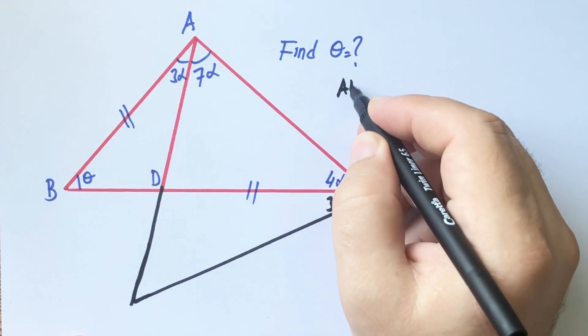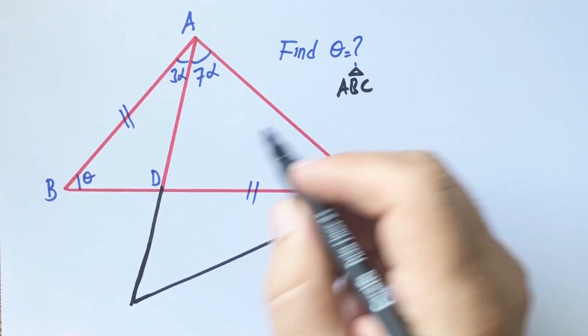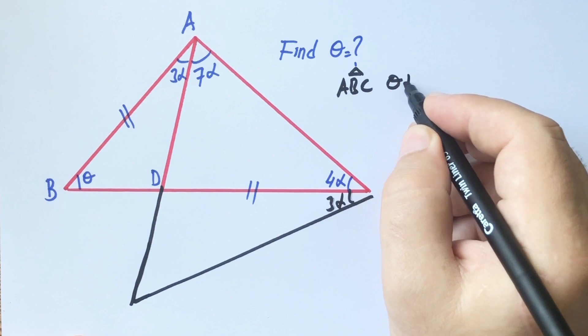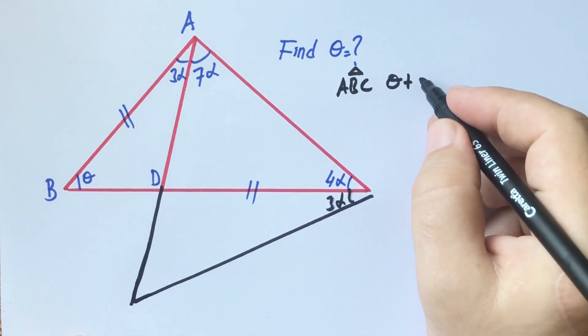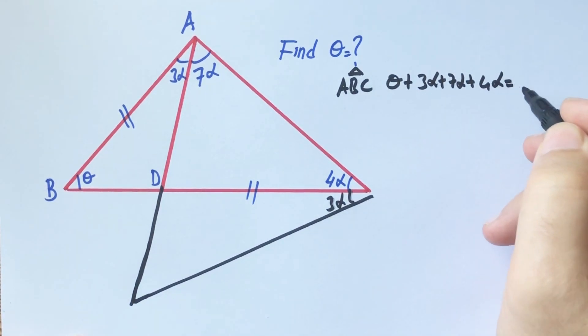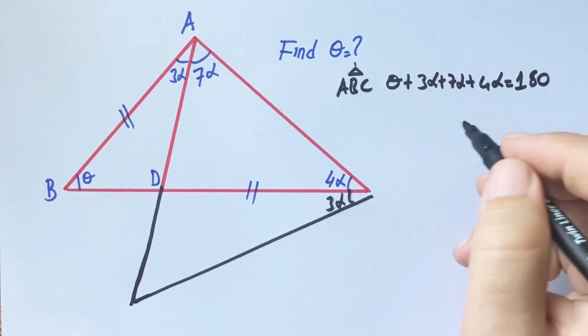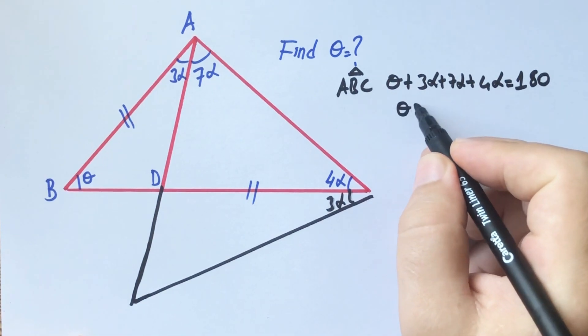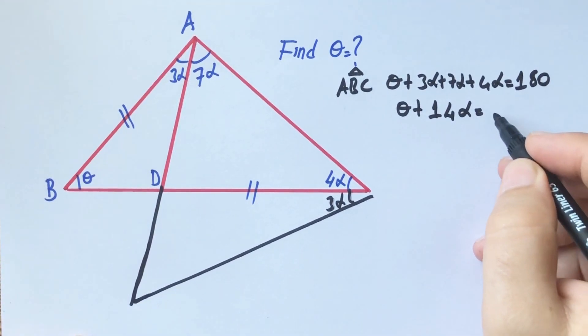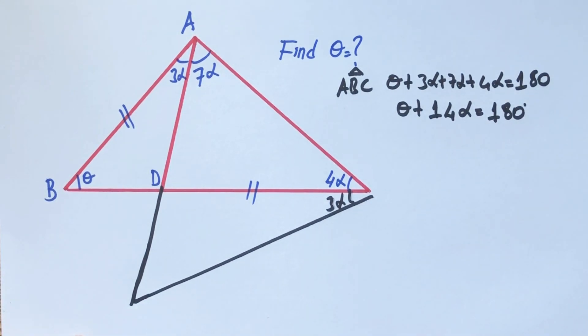Okay. For this triangle, we know that sum of the interior angles equals 180 degrees. So, theta plus 14 alpha equals 180 degrees.